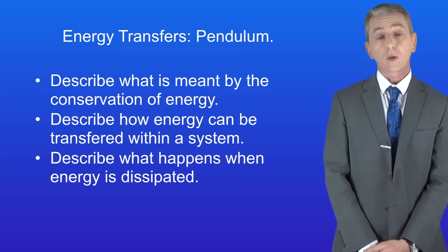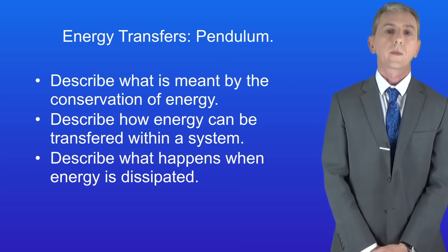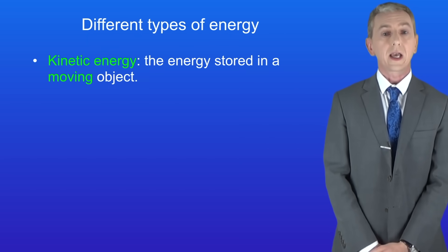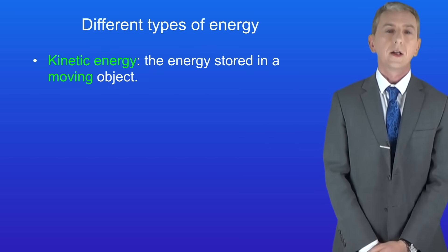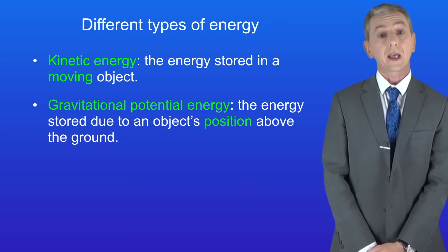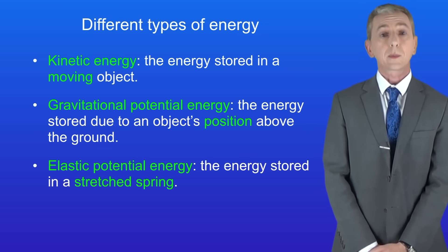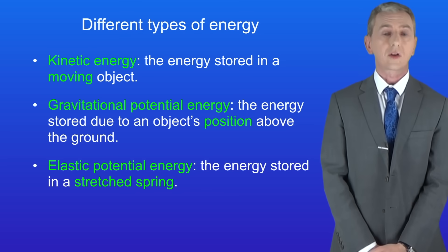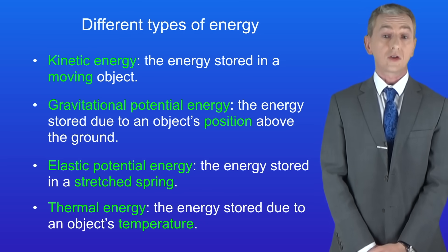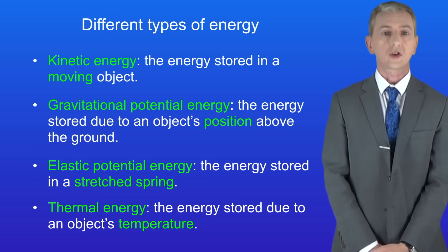Over the last few videos we've been looking at different forms of energy. We've seen that kinetic energy is the energy stored in a moving object. Gravitational potential energy is the energy stored due to an object's position above the ground. Elastic potential energy is the energy stored in a stretched spring. And finally thermal energy is the energy stored due to an object's temperature.